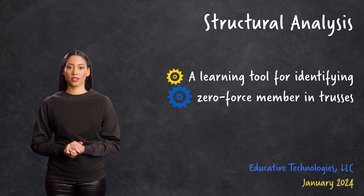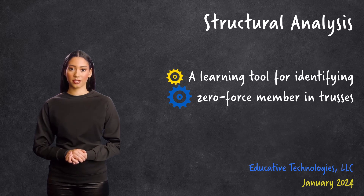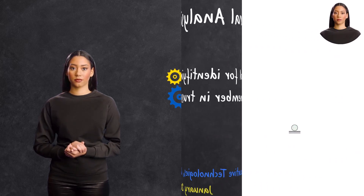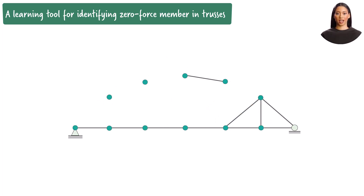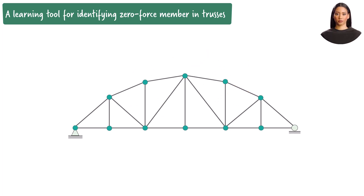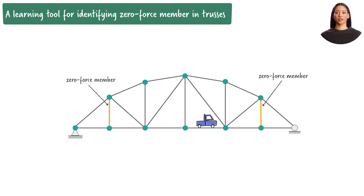A learning tool for qualitatively identifying zero-force members in trusses. In a typical truss structure, some truss members may not carry any axial force due to the load pattern placed on the structure. For instance, when a truss bridge is being analyzed under a moving load, some of the members away from the position of the load may carry no force. These are known as zero-force members.